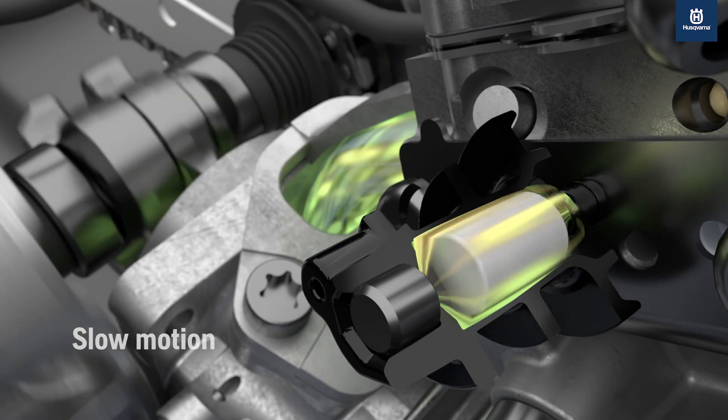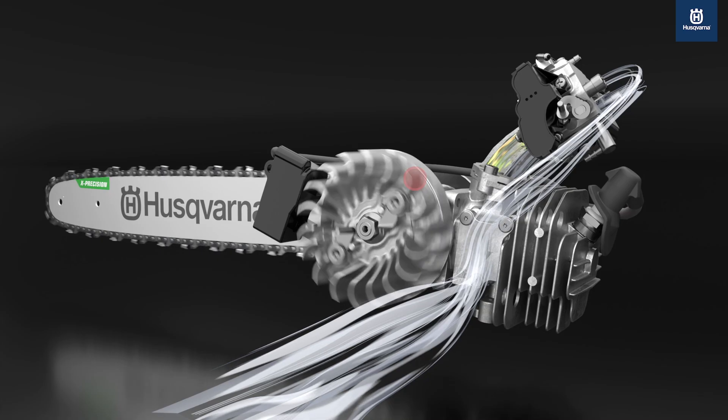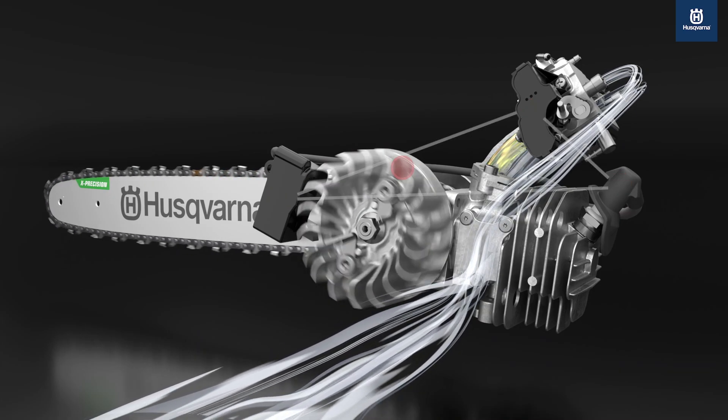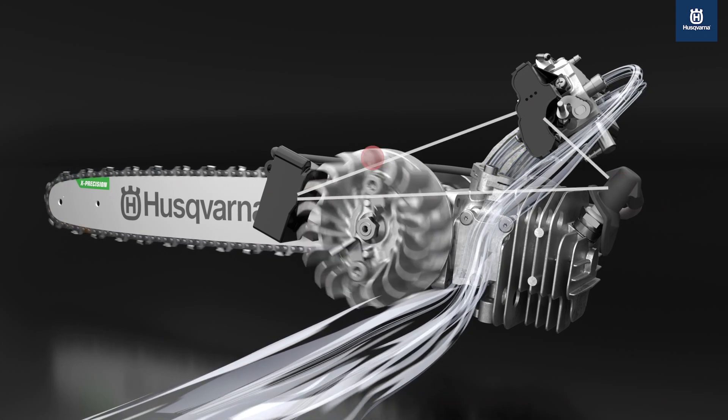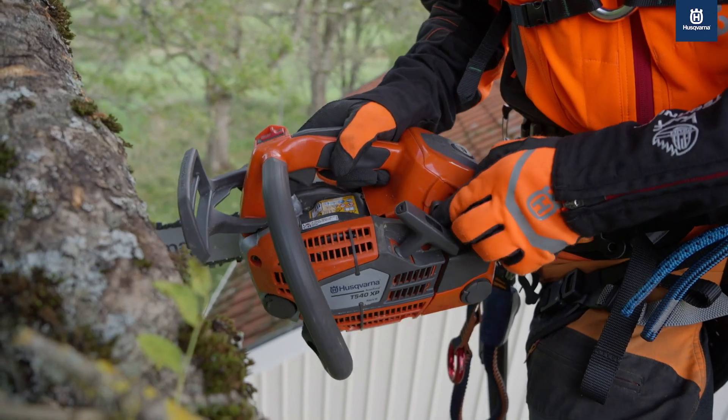AutoTune automatically adjusts for changes in temperature, humidity, elevation, and fuel quality. AutoTune 3.0 is a game-changer, enabling your Husqvarna chainsaw to operate at maximum efficiency with minimum downtime.